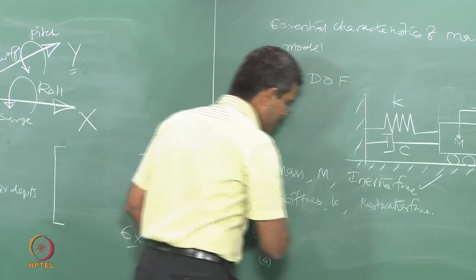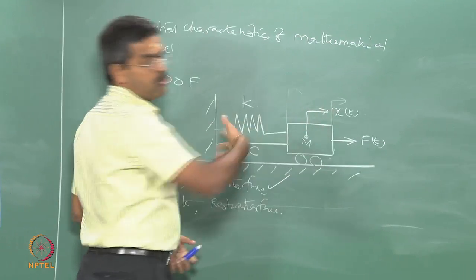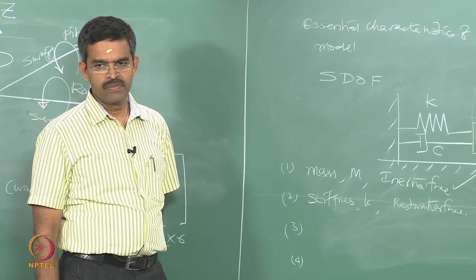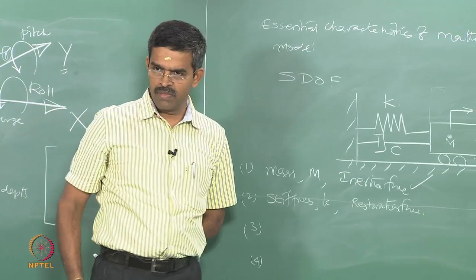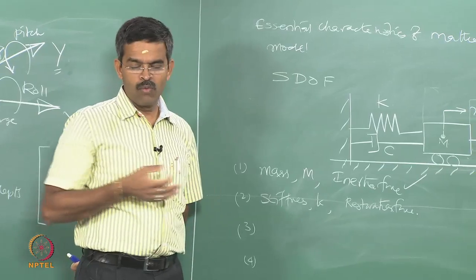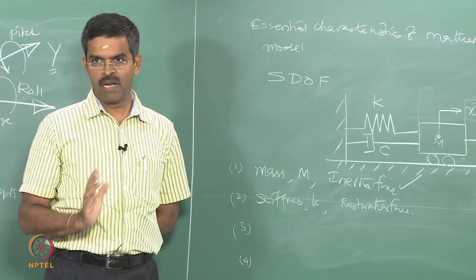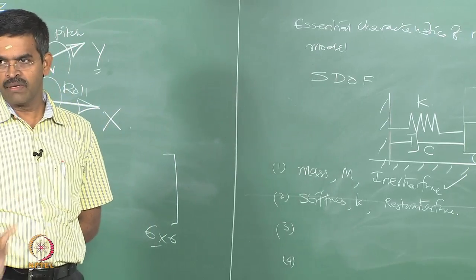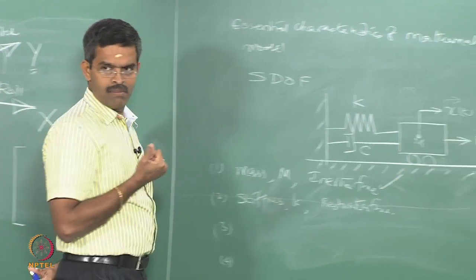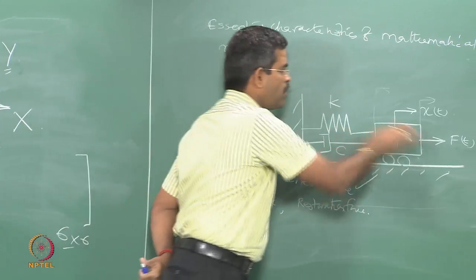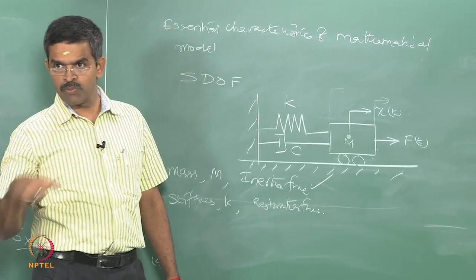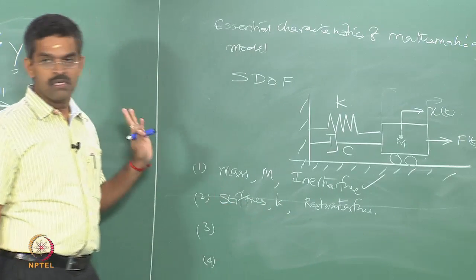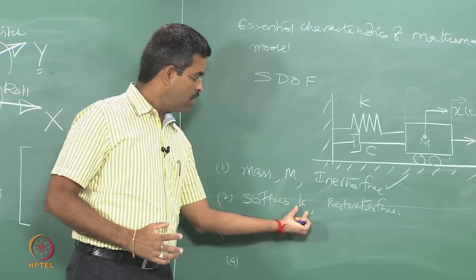If the spring does not exist, the mass will not restore its position and will keep moving in the direction the force pulls it. Therefore, there is no offshore structural system where the mass can move wherever it wants — the platform has to stay in place for exploration and production. So we need a mechanism by which, even though the force pulls or pushes the mass, the mass should restore its position. Restoration is essential, which comes from the stiffness of the member K.